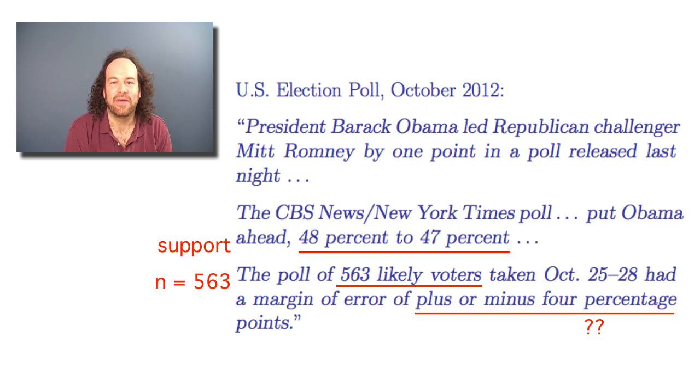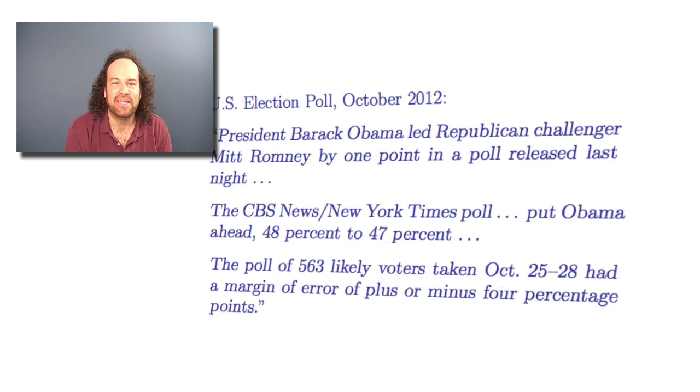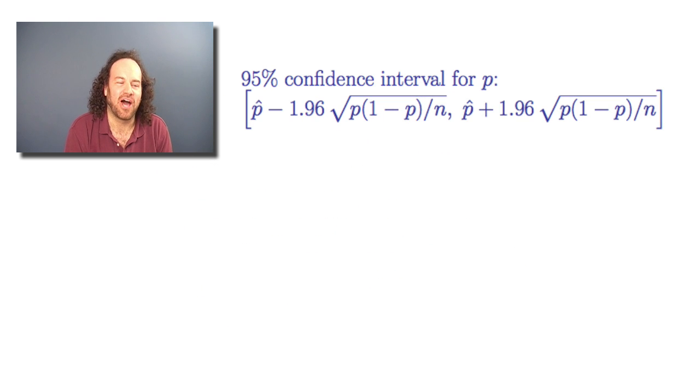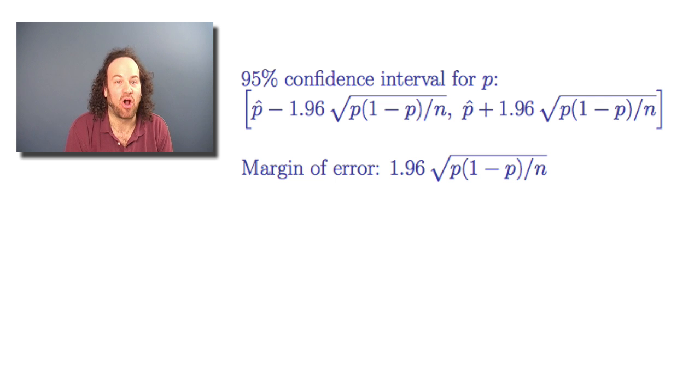Well, now that we understand confidence intervals, we can understand what they're saying. Indeed, if we remember that formula for the confidence interval, we had that range was between p-hat minus something and p-hat plus something. Well, that something is often called the margin of error.